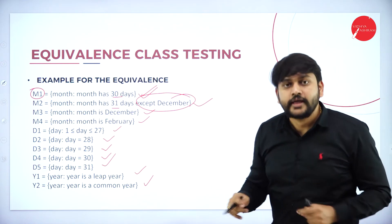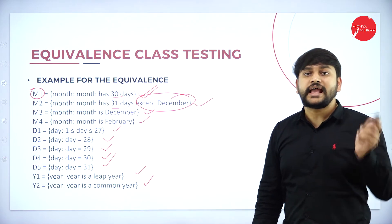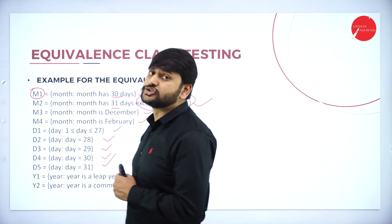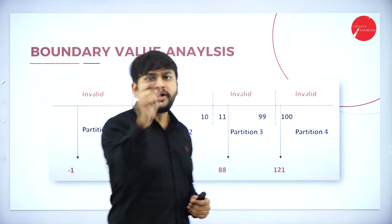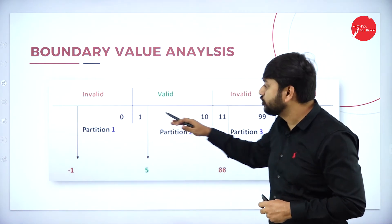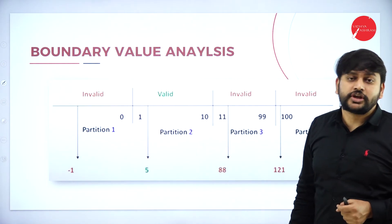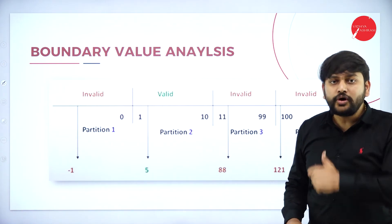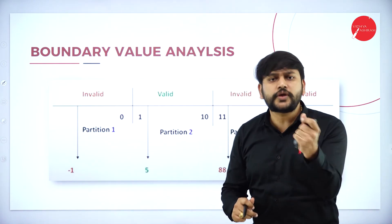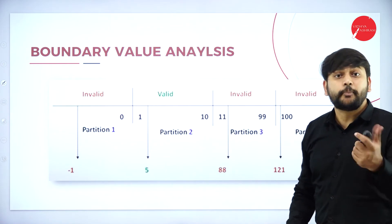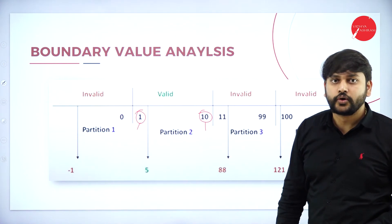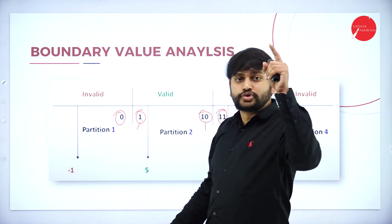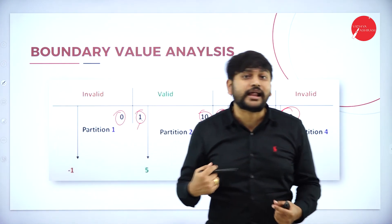Moving forward to the next concept: boundary value testing. In equivalence class testing, I was randomly picking values within the partition. But in boundary value testing, I test only the boundary values — meaning the beginning value and the end value of the range. For example, for the partition 1 to 10, the boundary values are 1 and 10. So I will test 0, 1, 10, 11, 99, and 100.